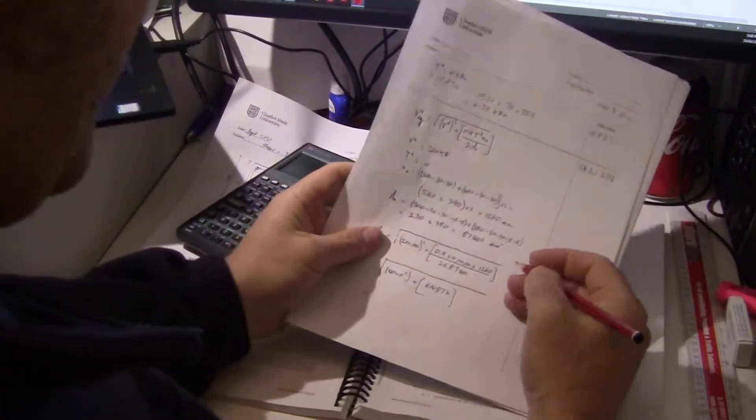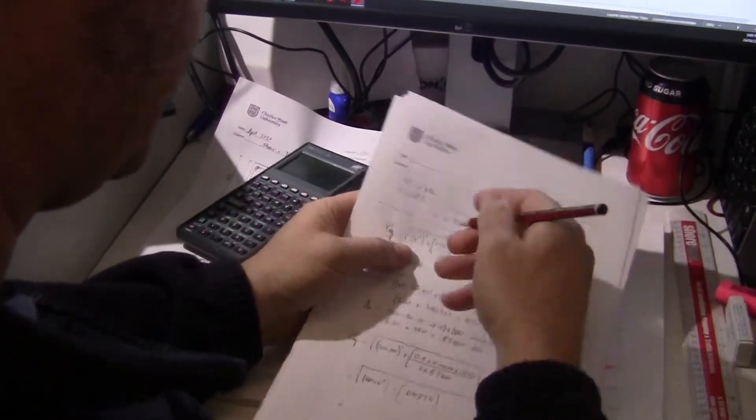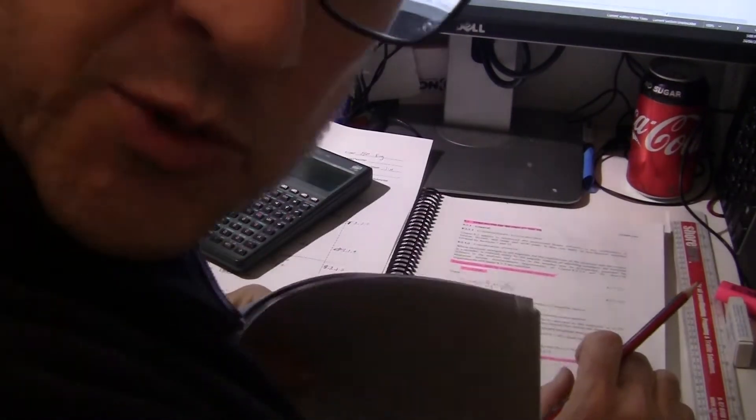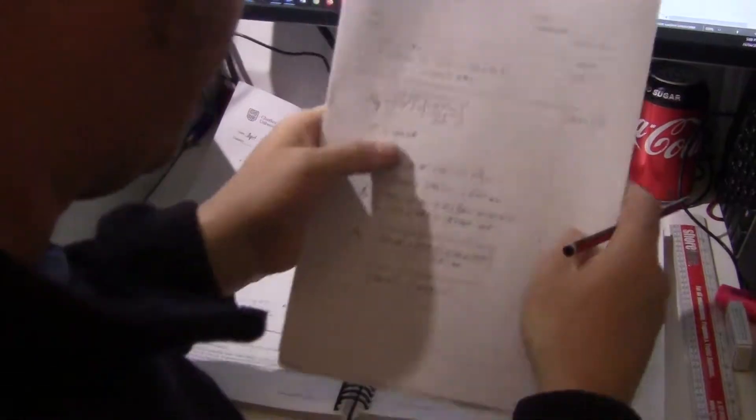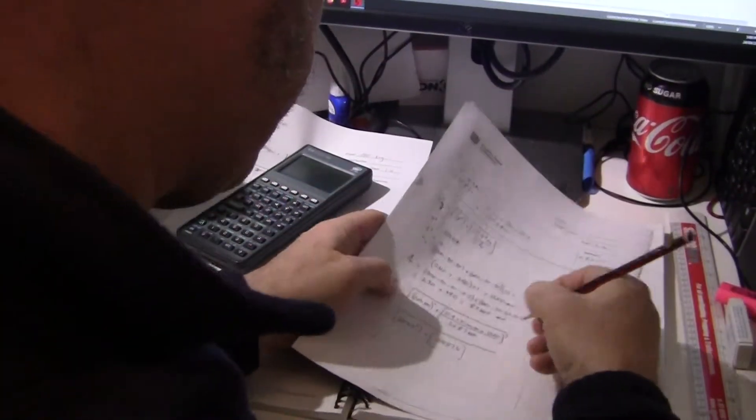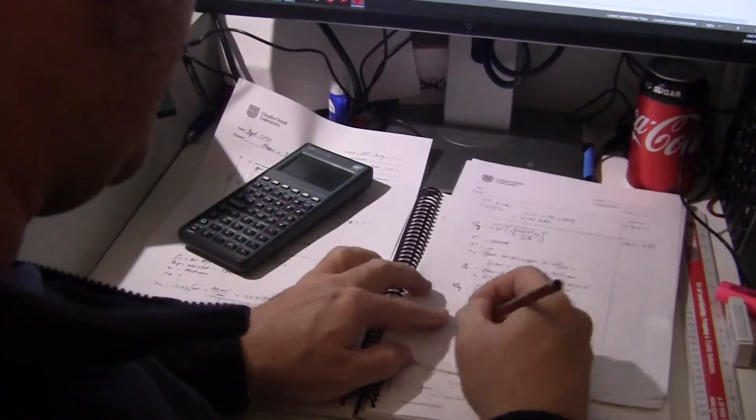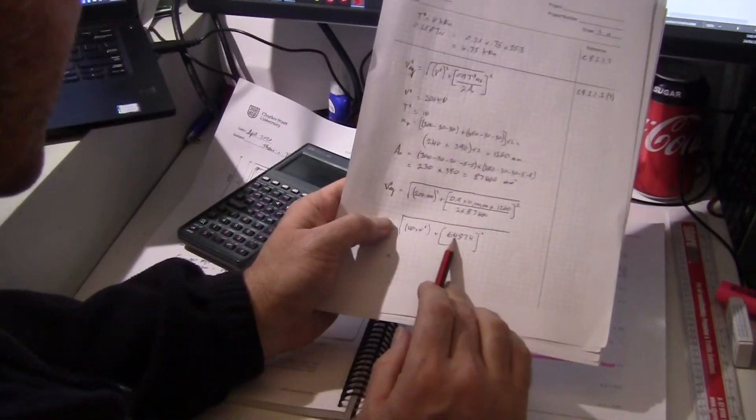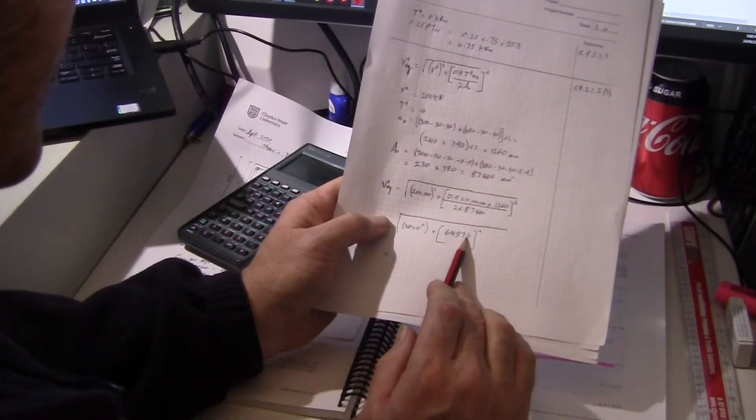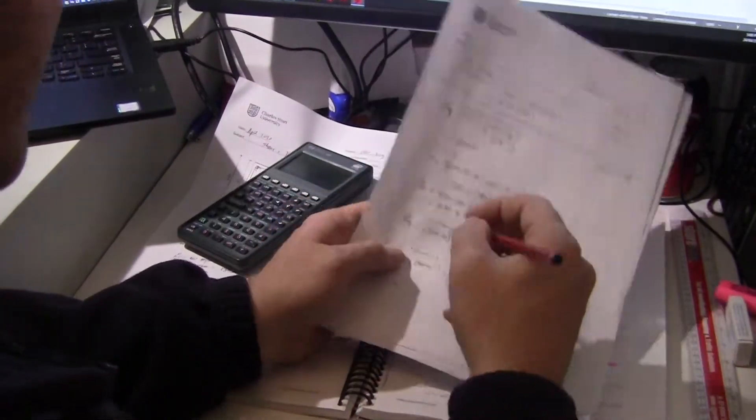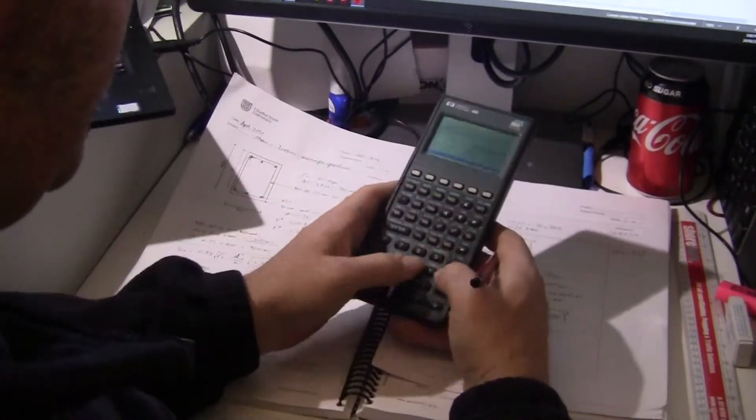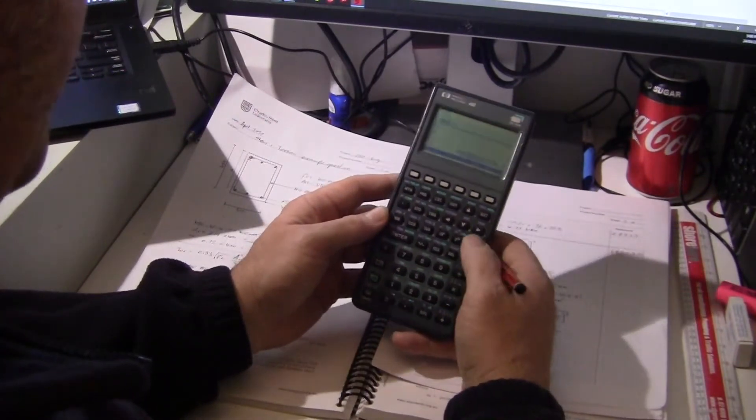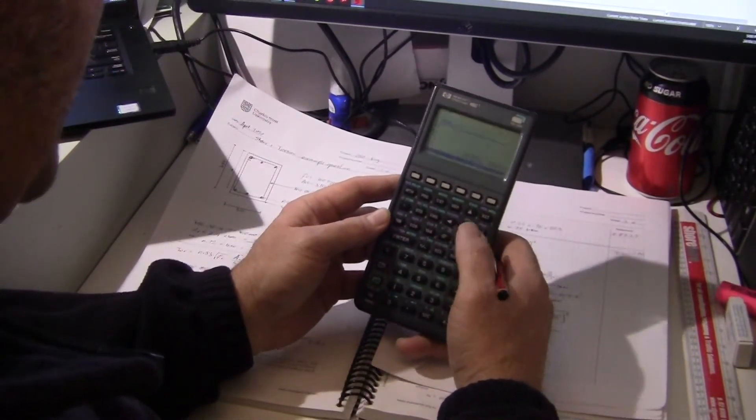Alright, I forgot that is squared there. There's a little squared there - always watch out for those squareds, they can cause all sorts of pain and torture. So we got down to 40 times 10 to the 6 plus 6,000, so 64,874 squared. Add those together, plus take the square root of that and you get...